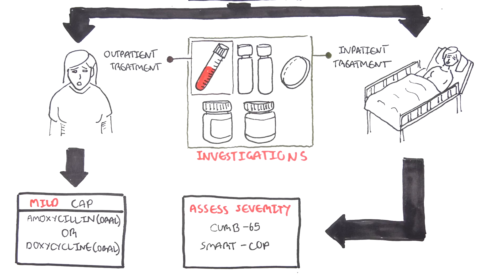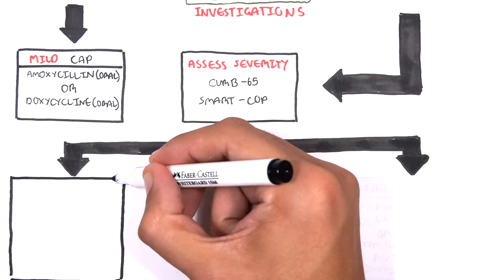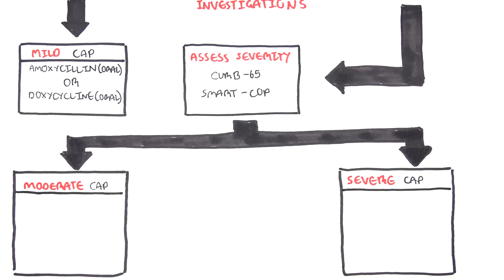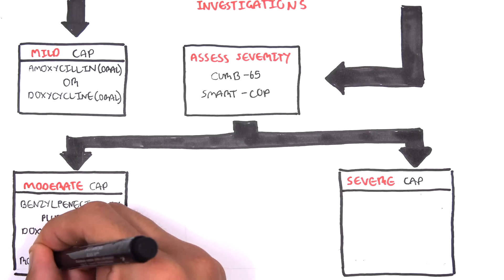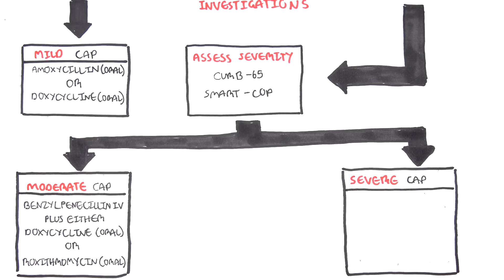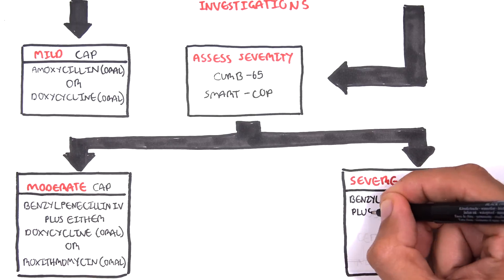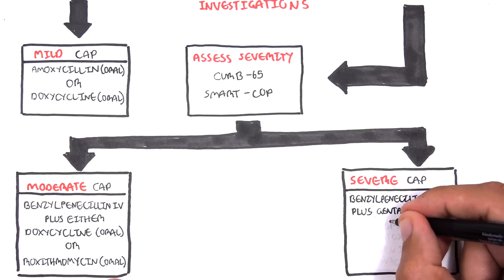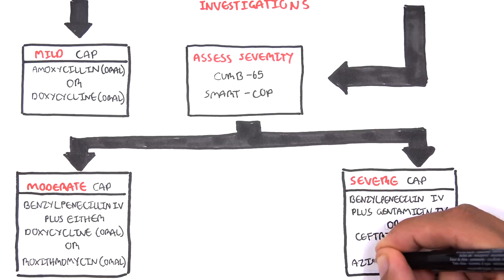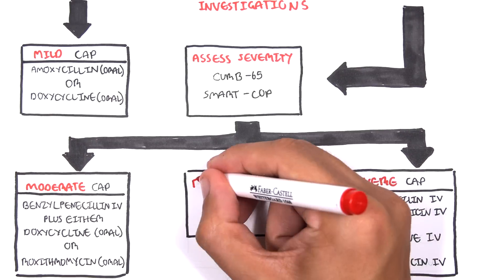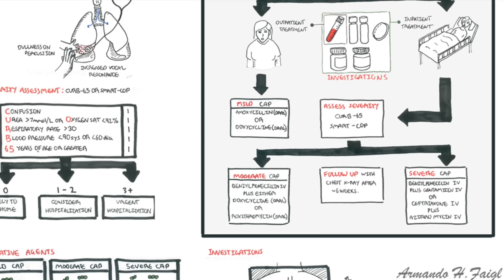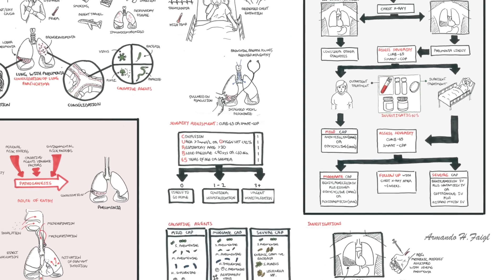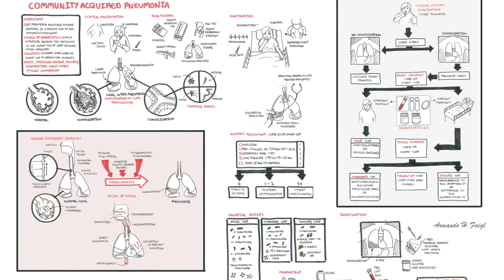Assess severity again — the patient will be either moderate or severe. For moderate CAP, treat with benzylpenicillin IV plus either doxycycline oral or roxithromycin oral. For severe CAP, treat with IV antibiotics throughout: benzylpenicillin IV plus gentamicin IV, or ceftriaxone IV plus azithromycin. Remember to follow up with a chest x-ray at 6 weeks to see if the lungs are clear. Note that this pathway comes from the Australian guidelines from 2016, is likely to change, and may be different in your country.